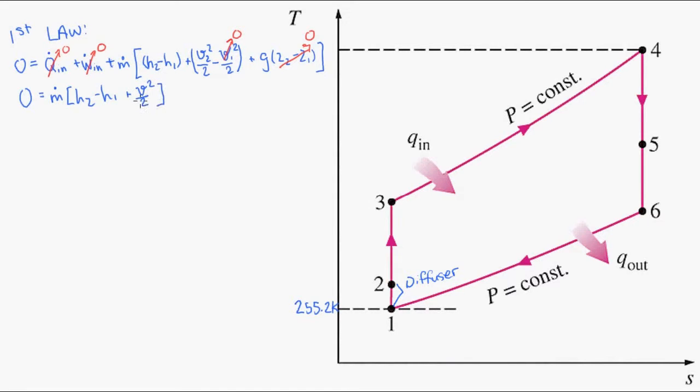Since we have constant specific heats we can convert these enthalpies to temperatures. And since we know T1 and V1 we can solve for T2. So when we solve this equation we get T2 is equal to 297 Kelvin.